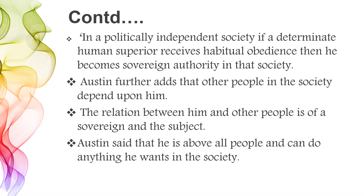Agar ek politically independent, azaad society hai, aur usme log us determinant human superior ko obey karenge, to wo sovereign ban jayega, wo azaad ban jayega, ek superior person ban jayega us society mein. Austin further adds that other people in the society depend upon him. Austin is saying that he will be sovereign and the rest of the people will depend on him. The relation between him and other people is of sovereign and subject.